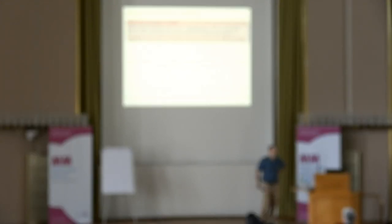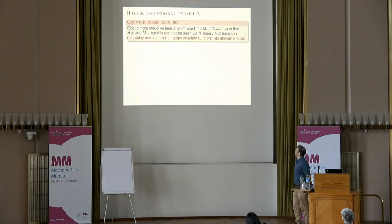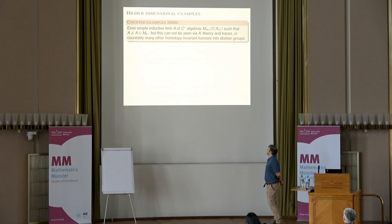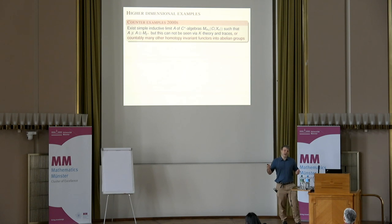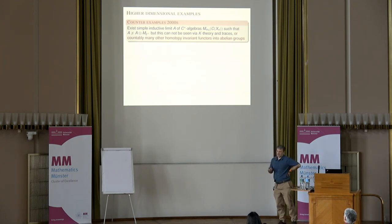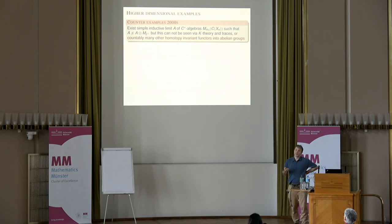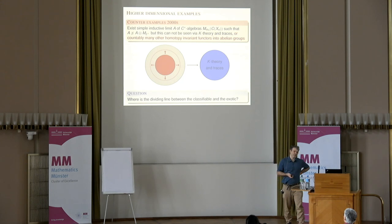Around 2000, C*-algebras showed they can sometimes behave very badly. Extremely pathological examples produced by Villadsen in the late 90s were converted into a precise statement: there exist simple inductive limits of C*-algebras built from matrices over spaces which cannot be classified by K-theory and traces, nor by anything else practically computable. So rather than trying to enlarge the class of invariants, the strategy is to find the precise dividing line between the classifiable and the non-classifiable.